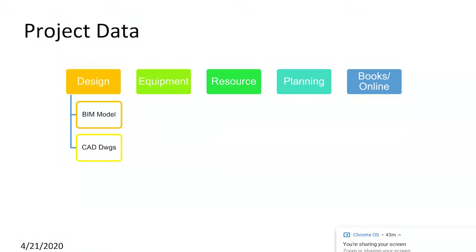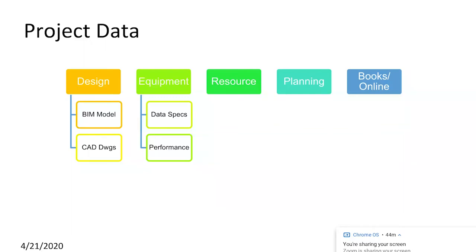The next phase covers equipment and mechanical tools required to complete the project. Equipment-related data includes specifications and how to procure those tools, and their performance and efficiency. Decisions on equipment can be informed by previous projects — for example, if excavation costs were excessive on a prior job, for the future project you could issue a tender to multiple parties to find the most cost-efficient contractor.